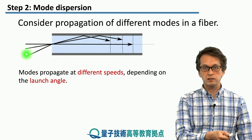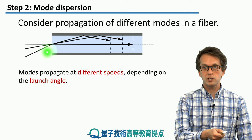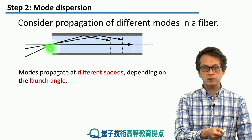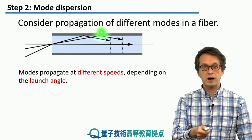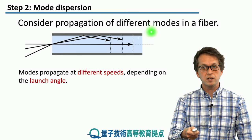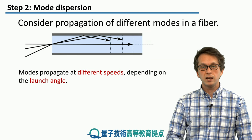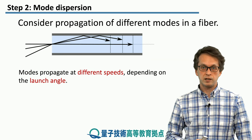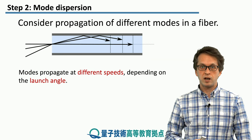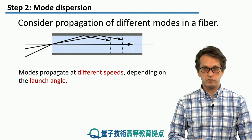This depends on the launch angle. Depending on the angle with which light is coupled to the fiber, the path that it takes will be different, and therefore the time that it takes to traverse the fiber will also be different.